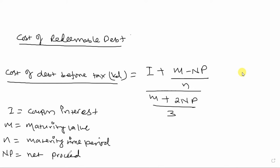That is the bond valuation method. The maturity value is the key value. Using the bond valuation method, KD is the cost of debt. KD is before tax; for after tax you use KD times one minus tax rate, giving KDT.